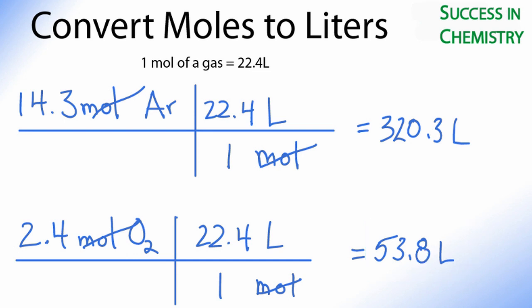So the key to the factor label method is to arrange our conversion factor so that we're left with the unit that we're interested in. In this case, we want moles to cancel out and be left with liters.